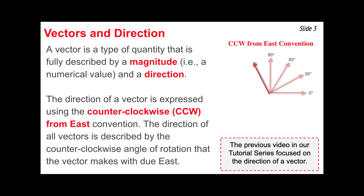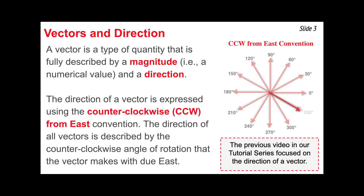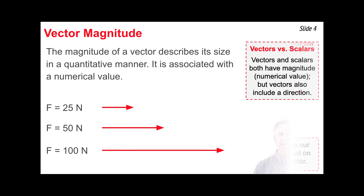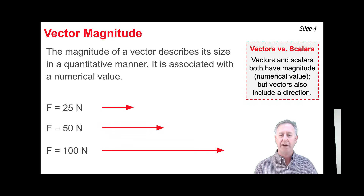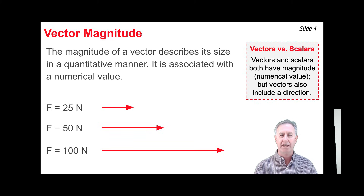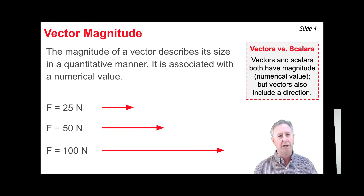In the animation shown here, you'll notice several vectors of varying directions, and their counterclockwise from East direction is identified. In physics, quantities can either be vectors or scalar quantities. Both have a magnitude, but only a vector has a direction. When we talk about magnitude, we mean numerical value, amount, or quantity.